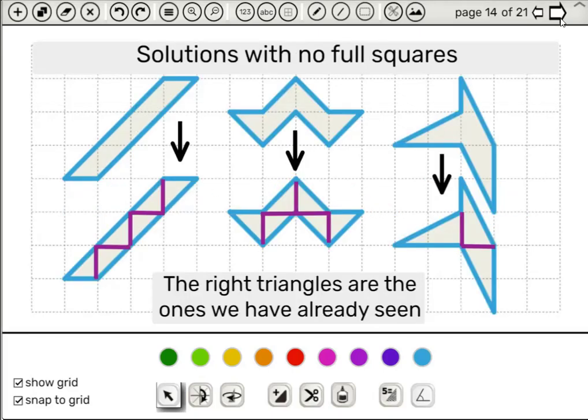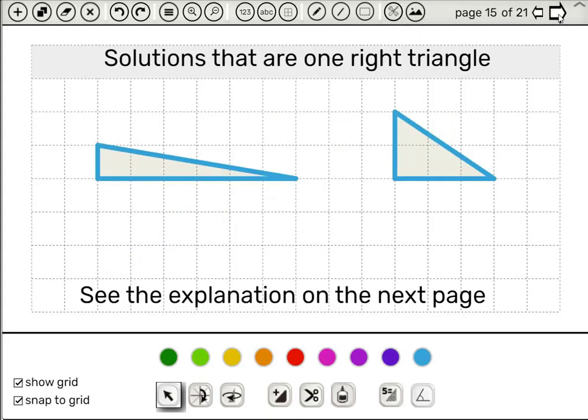And next here we have solutions with no squares. These solutions are still based on the two types of triangles we saw so far. And they're combined in very interesting ways. It's not certain that any student will come up with these solutions, but it's still interesting to show them to them. And see the solutions we have.